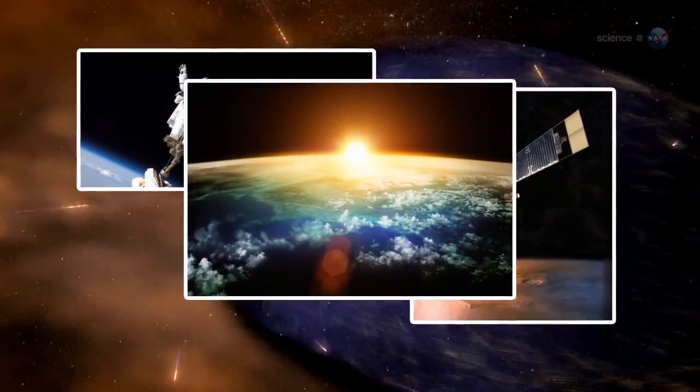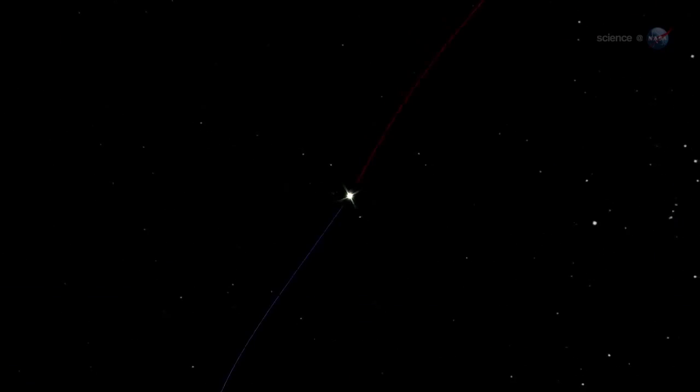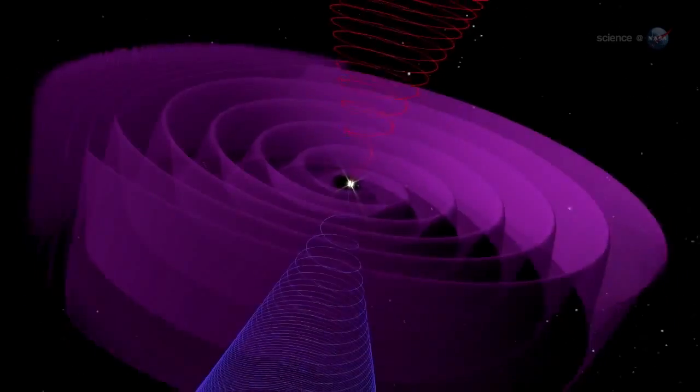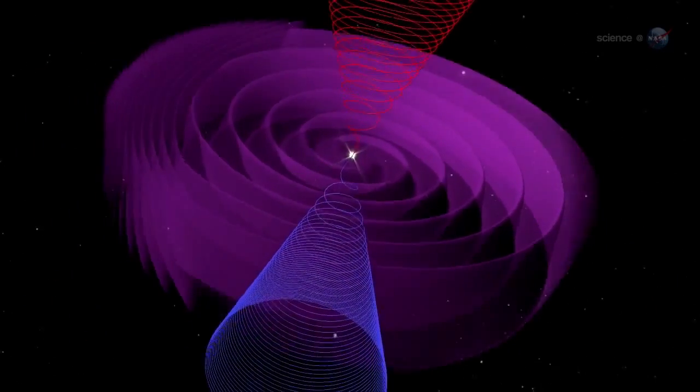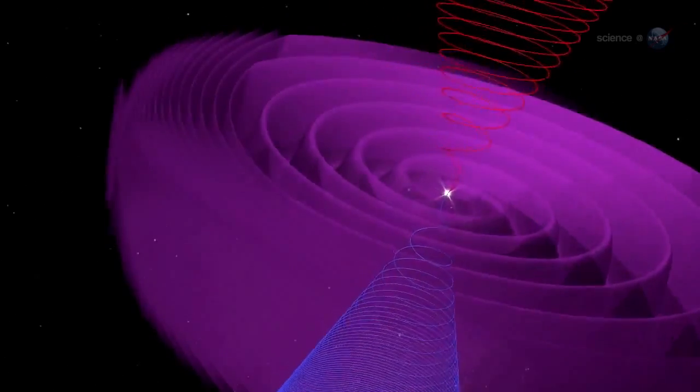...and some researchers say they might affect the cloudiness and climate of Earth. The current sheet acts as a barrier to cosmic rays, deflecting them as they attempt to penetrate the inner solar system. A wavy, crinkly sheet acts as a better shield against these energetic particles from deep space.